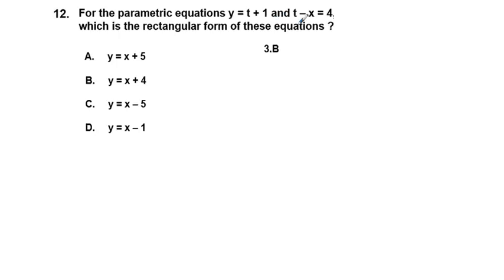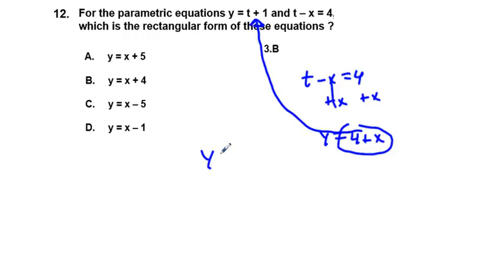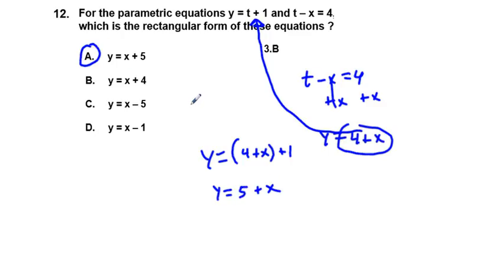Problem 12: Given parametric equations y equals t plus one and t minus x equals four, find the rectangular form. From t minus x equals four, add x to both sides to get t equals four plus x. Substituting into y equals t plus one gives y equals four plus x plus one, so y equals x plus five. The correct answer is A.